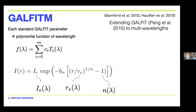GALFIT-M expands the Sérsic function using Chebyshev polynomials, where every parameter — surface brightness, effective radius, Sérsic index — is expanded through wavelengths. The user can choose the degrees of freedom with which each parameter changes from wavelength to wavelength: it could change linearly, quadratically, or be imposed to be the same across all wavelengths.